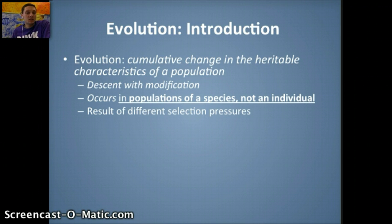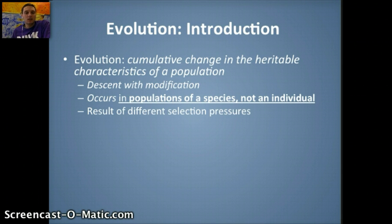This is based off of descent with modification. Genes and DNA and traits are inherited from parents in both asexual and sexual reproduction. Evolution occurs in a population of a species, but not in an individual. It's very important to remember that when we're talking about evolution, we're specifically talking about change in a population, not in an individual.